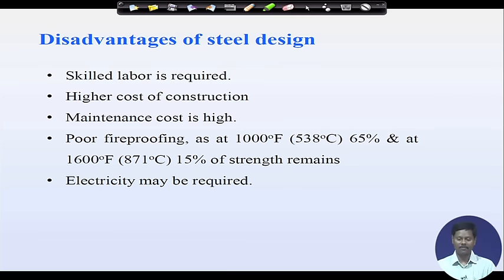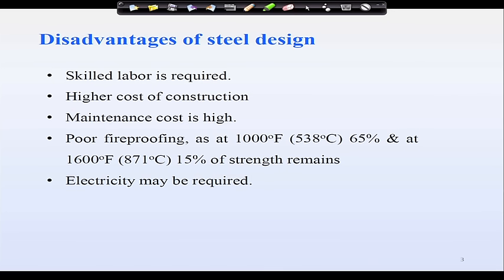Next is poor fire proofing. At 1000 degrees Fahrenheit — that is 538 degrees centigrade — almost 65 percent strength remains, meaning 35 percent strength is lost. Therefore it is less fire-proof, and we have to be cautious about fire safety when using steel as a structural material. Another problem is that electricity may be required. If construction is in a remote area where electricity is a problem, we may not be able to go for welded connections properly, which can create difficulties.